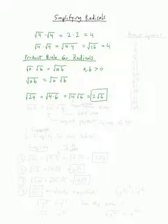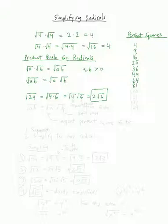So how did we figure out to choose 4 and 6? First of all, it pays to know what the perfect squares are. You can generate this list by squaring numbers by hand or with a calculator. So: 2 squared is 4, 3 squared is 9, 4 squared is 16, 5 squared is 25, 6 squared is 36, 7 squared is 49, 8 squared is 64, then 81, 100, 11 squared is 121, 12 squared is 144, 13 squared is 169. We'll stop there, since you rarely need ones this big.